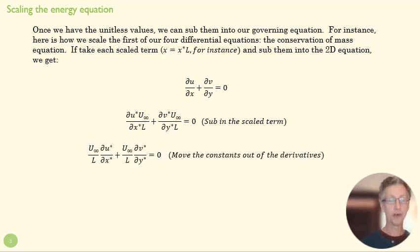Now these are derivatives. So because they're about change, we know these constants aren't changing. We can pull those constants outside of our derivative. U infinity and L are both constants. Those characteristic values are going to stay the same for the whole problem. So we pull those guys out of here.